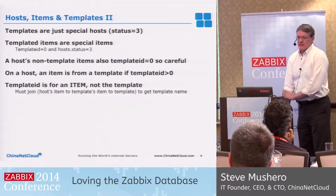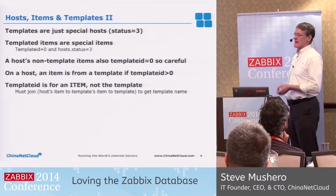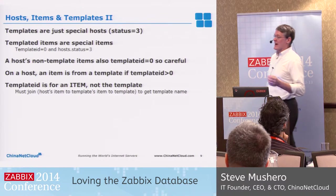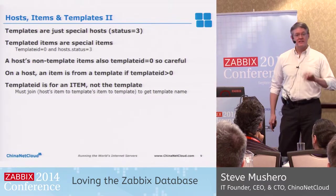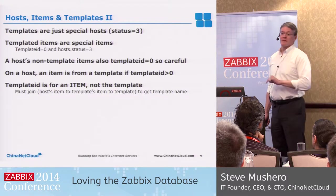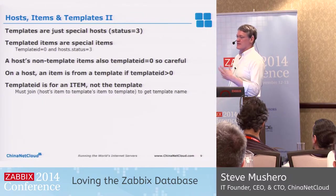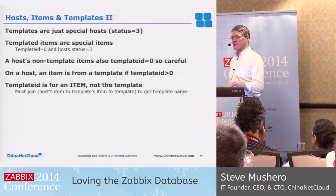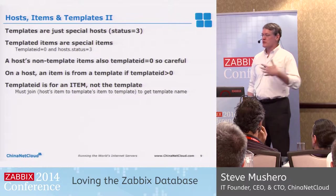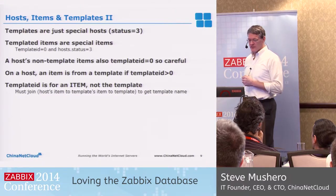Templates are great — and templates are actually hosts. In the database, templates are hosts of status 3. This is where things are confusing: status 0 hosts are active hosts, status 1 hosts are disabled hosts, status 3 hosts are templates. It can be a little bit confusing as you start to join things, because statuses have multiple meanings — sometimes they're enabled, sometimes disabled, sometimes in error, and sometimes they're totally different things like templates. So when you're trying to pull out items from templates, join to hosts, and look at data, you have to keep all this in mind.